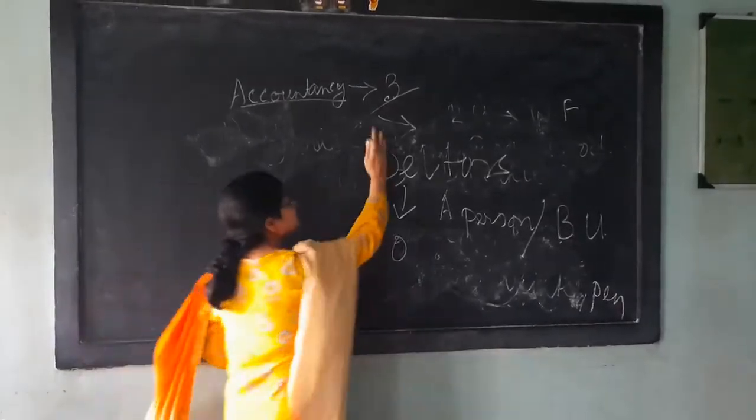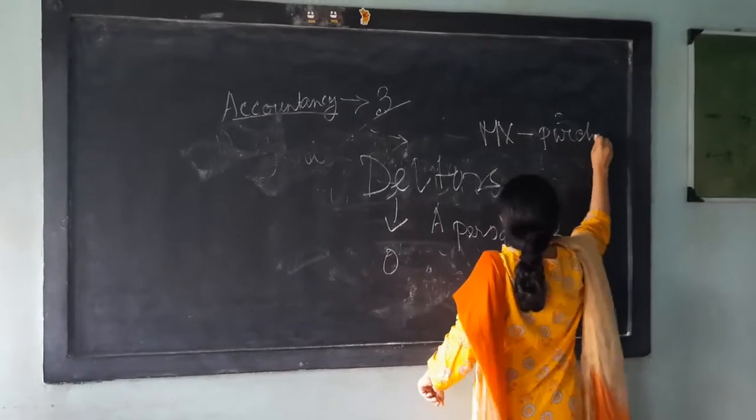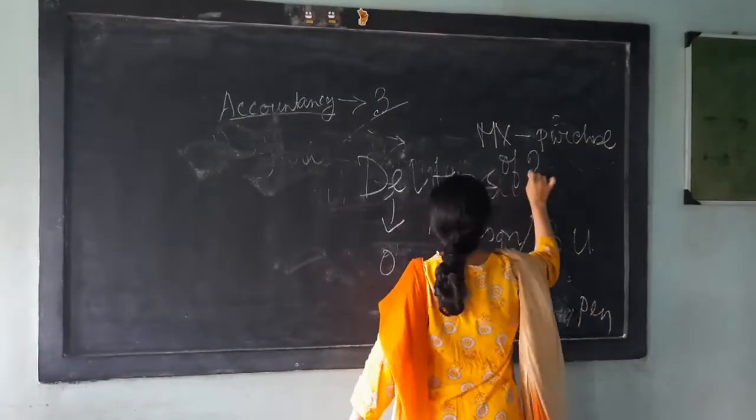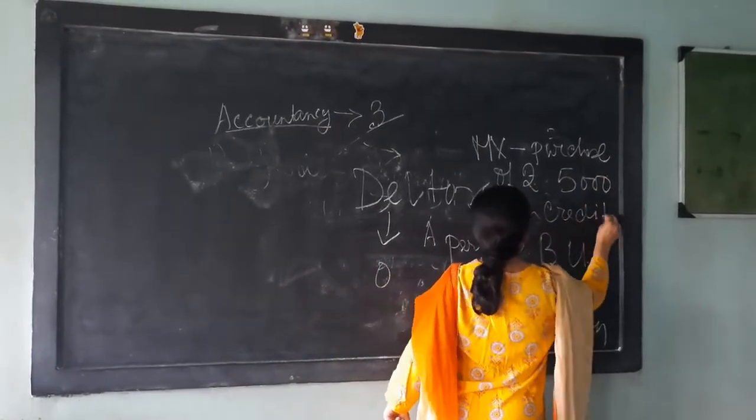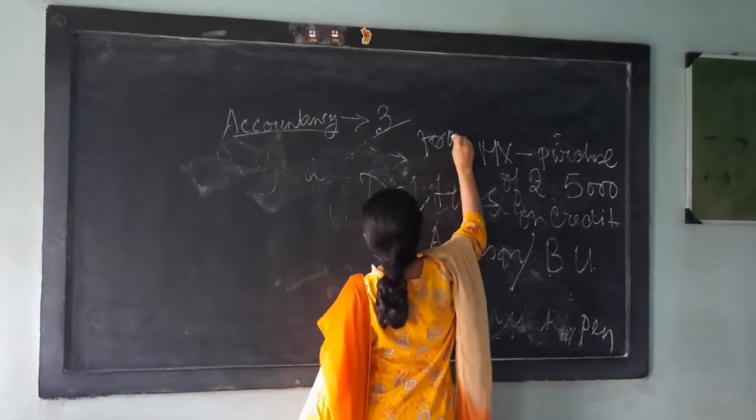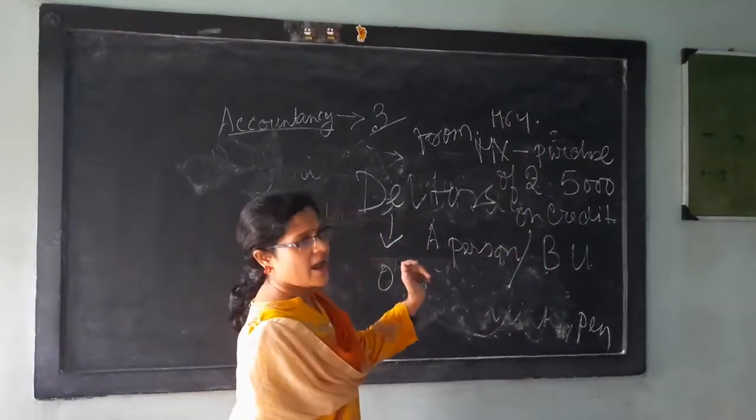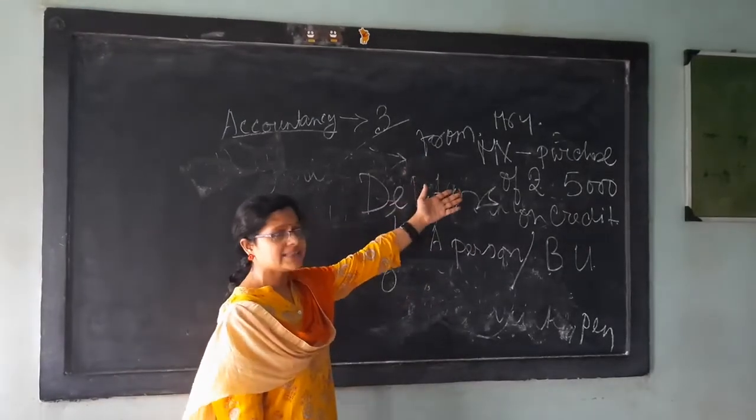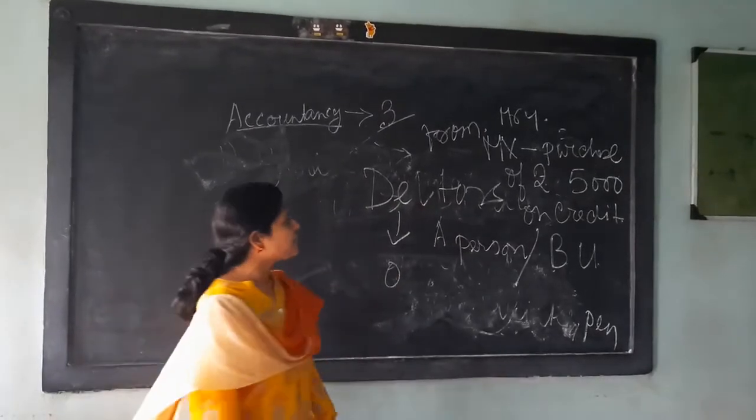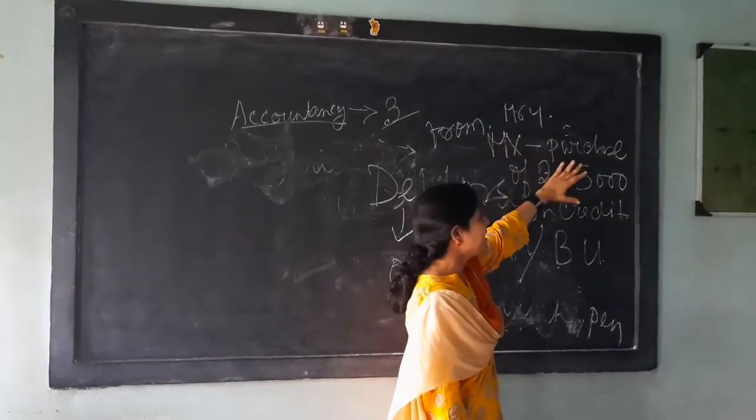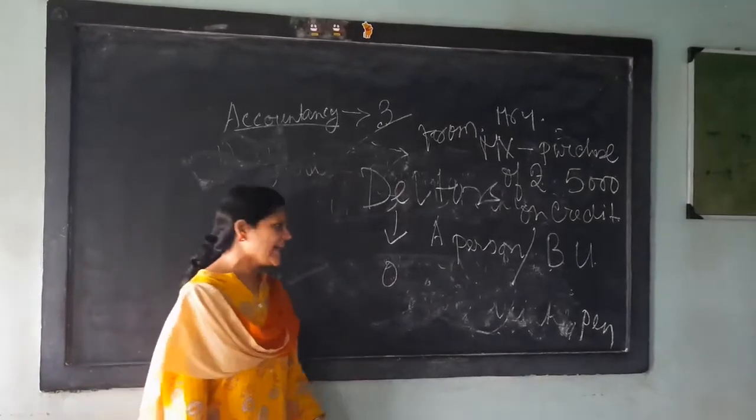Suppose, Mr. H, as I am reading, it will be clear. Mr. H purchased goods of rupees 500 on credit. Mr. H, from Mr. Y. What is that? Mr. H, he is an individual. He is the customer of Mr. Y. He has purchased the goods of 500 from whom? From Mr. Y on credit. He had not paid the money. It is very common.